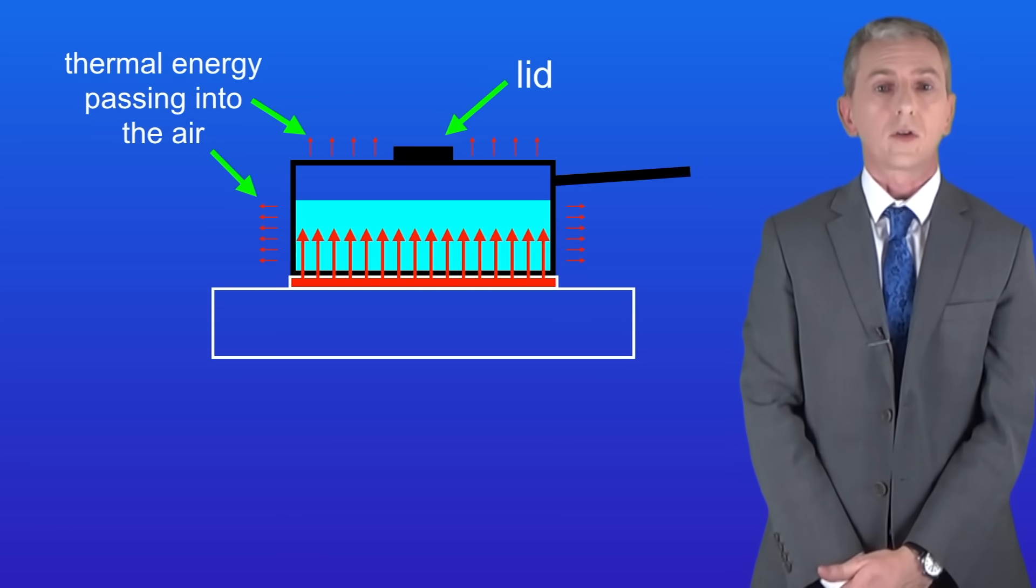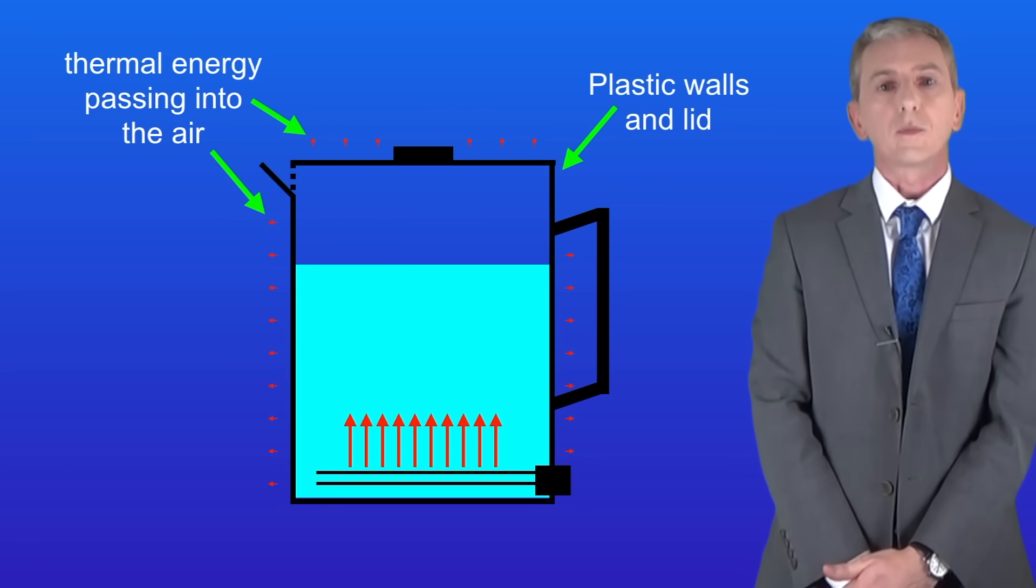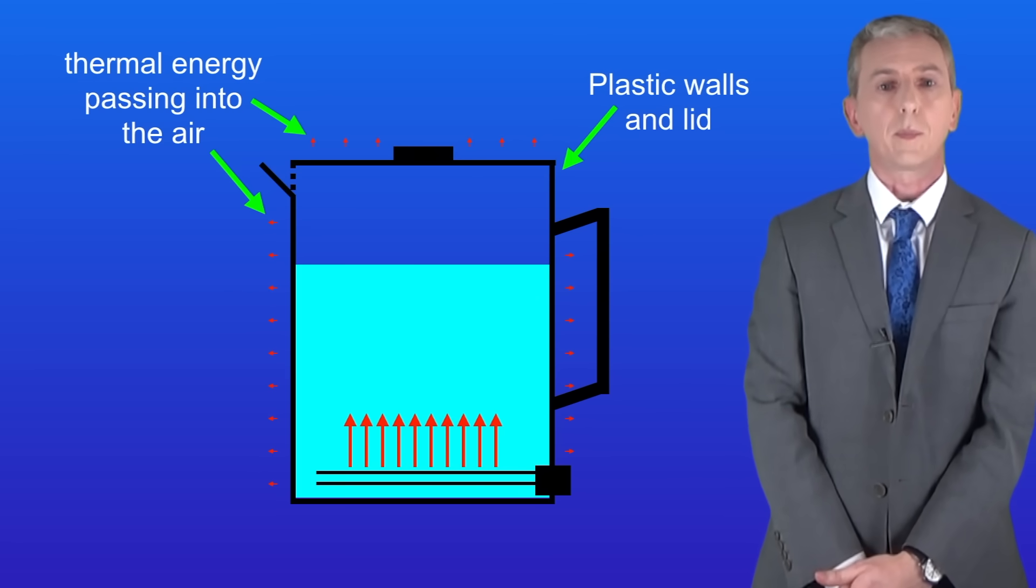And we're going to look at thermal conductivity in a later video. So looking at the kettle we can see that less thermal energy passes through the walls and the lid and into the air. So again this makes the kettle a more efficient way of heating water than using a pan.